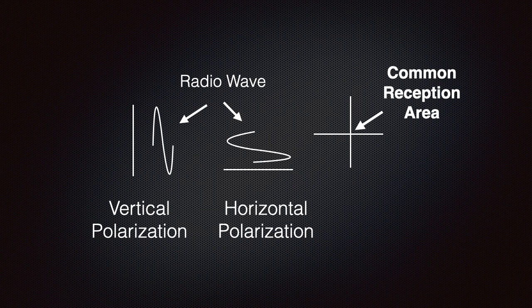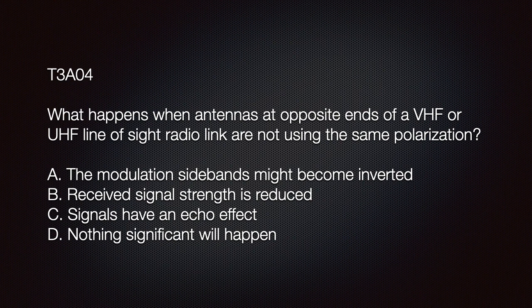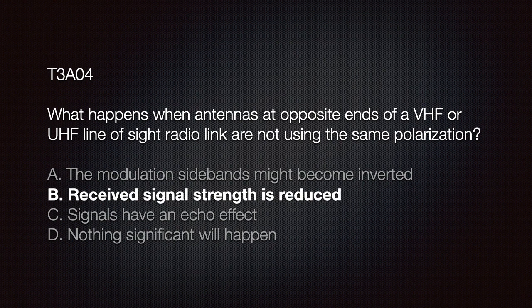You can see where the two intersect is the reception area they have in common, and that area is very small compared to the entire wavelength. The exam question: What happens when antennas at opposite ends of the VHF or UHF line-of-sight link are not used in the same polarization? Options include modulation sidebands becoming inverted, reduced signal strength, echo effect, or nothing significant. The answer is B: received signal strength is reduced.